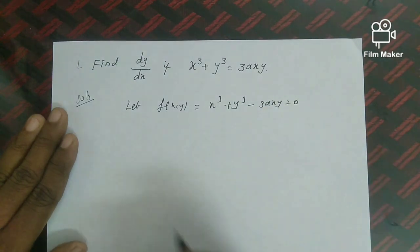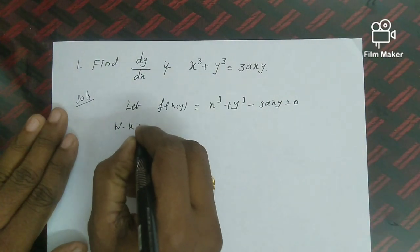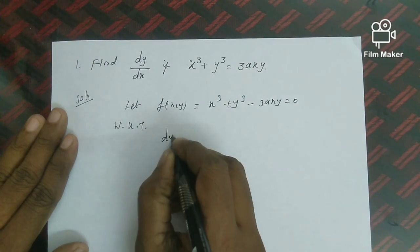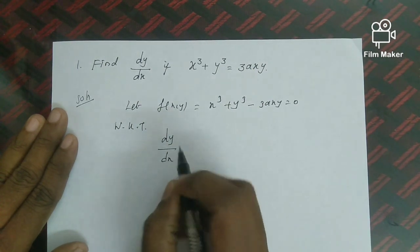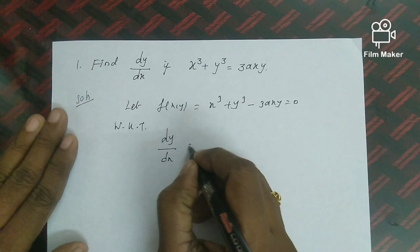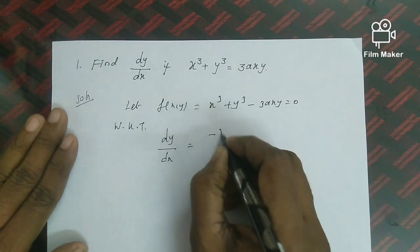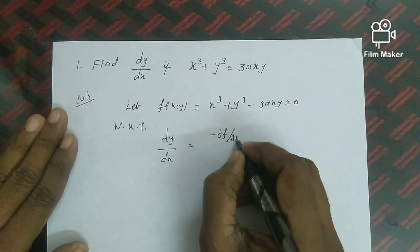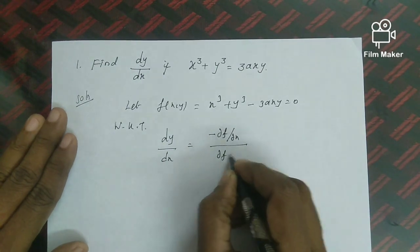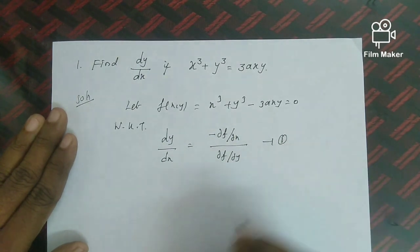From the formula, dy/dx = −(∂f/∂x)/(∂f/∂y). Now we find the partial derivatives with respect to x and y. Treating y as constant for ∂f/∂x: differentiate x³ to get 3x², y³ is constant giving 0, and −3axy gives −3ay.